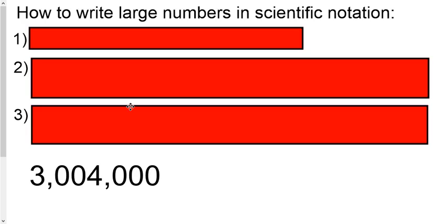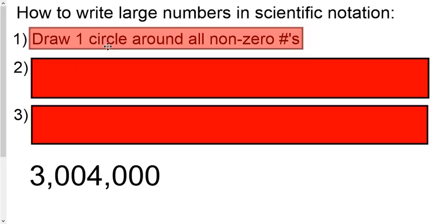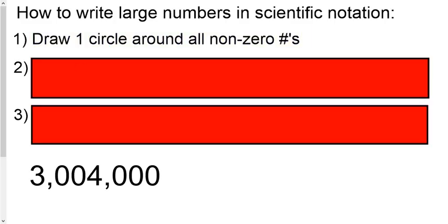So, how do we actually write numbers in scientific notation? If we have it in standard, like we have down here, we want to put it in scientific notation, we would do the following. Go through and circle all your non-zero numbers in one gigantic circle. So your first non-zero number is the 3 and the last one is the 4. So just circle all of those numbers in between your first and last non-zero number.